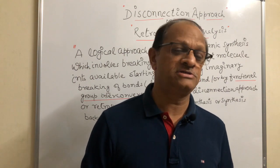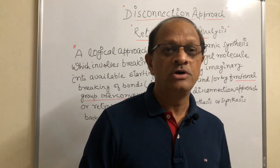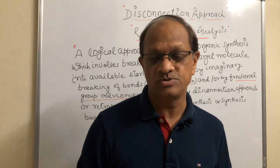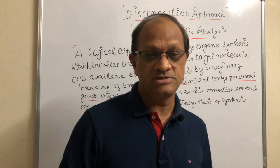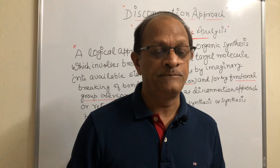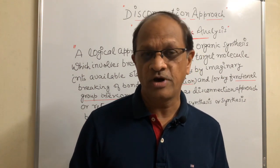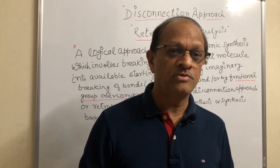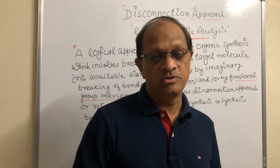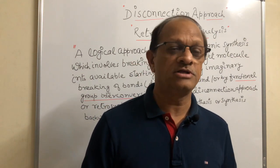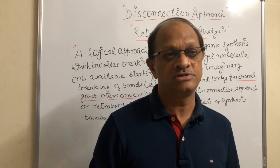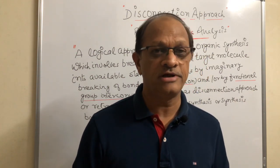ये जो smallest structure होता है, smallest molecule होता है, वो ऐसा होना चाहिए जो lab में easily available हो सके। ये जो smallest molecule होता है, ये हमारे उस reaction में reactant का work करते हैं। इस तरह से chemists उन reactants को identify करके, फिर उन पे reaction condition apply करके, उस bigger molecule को — जो हमने plant से extract किया था — synthesize करते हैं। ये जो पूरा process है, this process is known as disconnection process और retrosynthetic analysis।